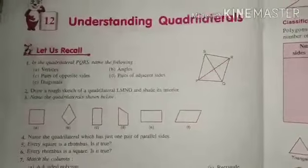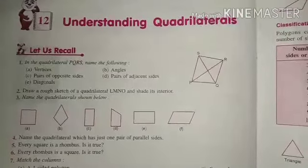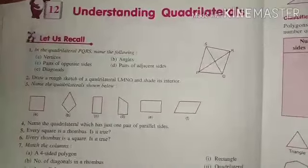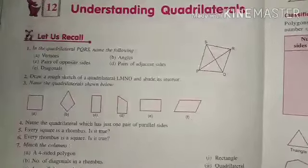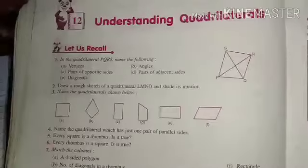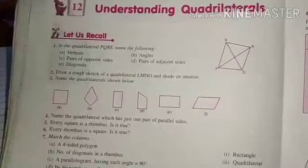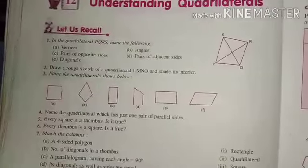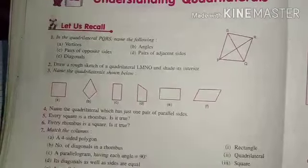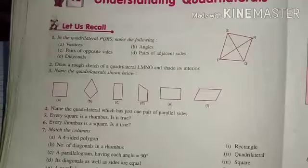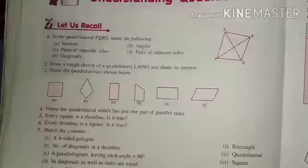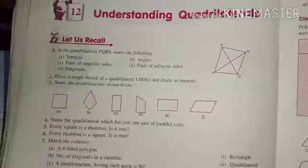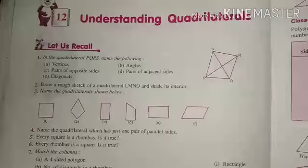Dear students, in the last class we completed 7.1 from the factorization chapter. The remaining part of the factorization chapter we will learn after our SA1 exam. Geometry is very important, so today we are going to start a new chapter from symmetry — that is, Understanding Quadrilaterals.